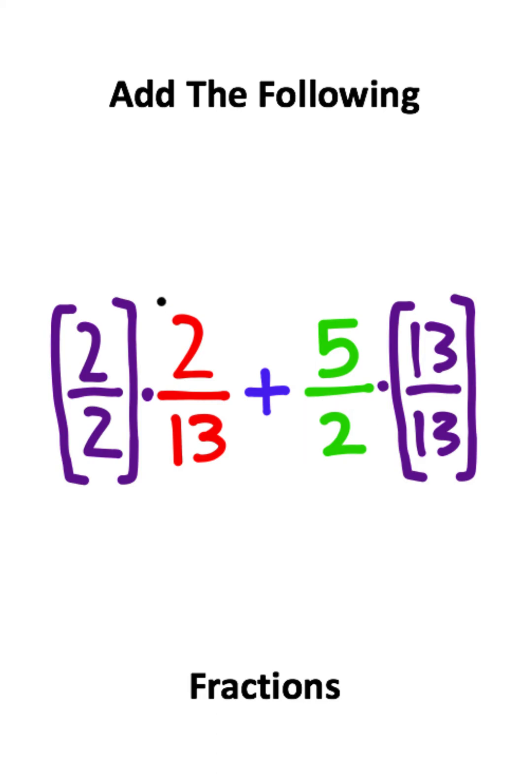Now notice all you did was take this two and multiply it by the numerator and denominator of the left fraction, and then took the thirteen and multiplied by the numerator and denominator of the right fraction. This works whenever there's not a straightforward way to scale denominators, and we're not breaking any math rules because you could just cancel the twos and cancel the thirteens and end up with the same expression we started with.